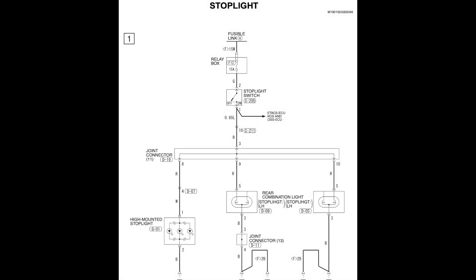Here's a wiring diagram from the factory service manual for the stoplight switch. Notably, the stoplight switch output is fed into ETACS, which is the centralized car computer, and the KOS and OSS ECU, which is for the push-to-start system. As push-to-start requires the brake pedal to be depressed for the vehicle to start, so the vehicle will otherwise enter accessory mode.